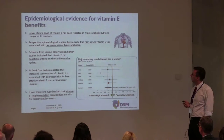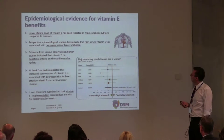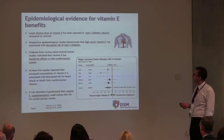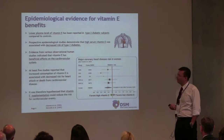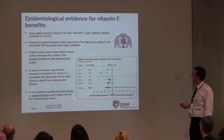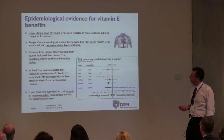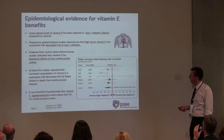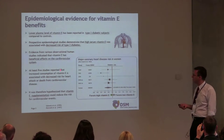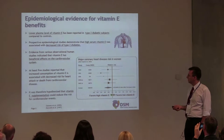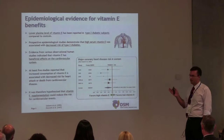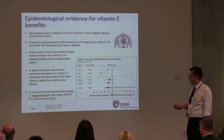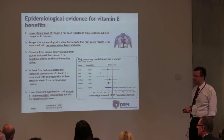And now vitamin E comes into the picture, first with some epidemiological studies. Some studies demonstrated that lower plasma levels of vitamin E were identified in type 2 diabetic subjects. Furthermore, high serum vitamin E levels were associated with decreased risk of type 2 diabetes. At least five large studies reported that increased consumption of vitamin E is associated with decreased risk of the cardiovascular complications of diabetes.